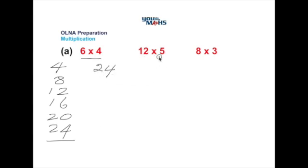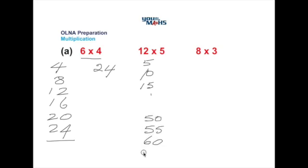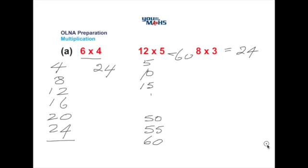If we look at the first few multiples of the five times table we see an interesting pattern. One multiplied by five gives us five, two fives are ten, and three fives are fifteen. The numbers will always end in five or zero. If we continue down this list we'll see that ten fives are fifty, eleven fives are fifty-five, and twelve fives are sixty. So twelve multiplied by five is sixty. Likewise, we can work through the multiples of three and find that eight threes equal twenty-four.